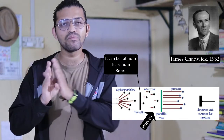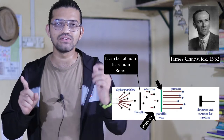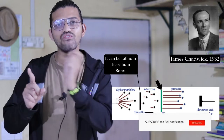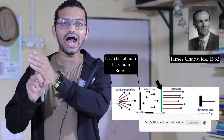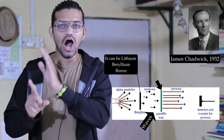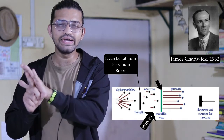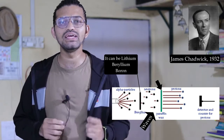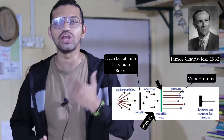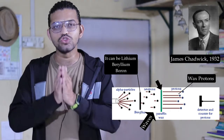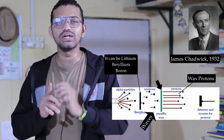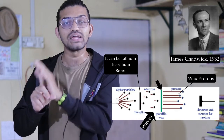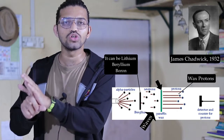Chadwick placed a piece of paraffin wax — the kind found in candles — and allowed those waves to hit the atoms of the wax. After being hit by those waves, the paraffin wax started releasing its protons with higher velocity. This means that within those waves there were particles that hit the atoms of the wax and caused protons to be released from the paraffin wax.